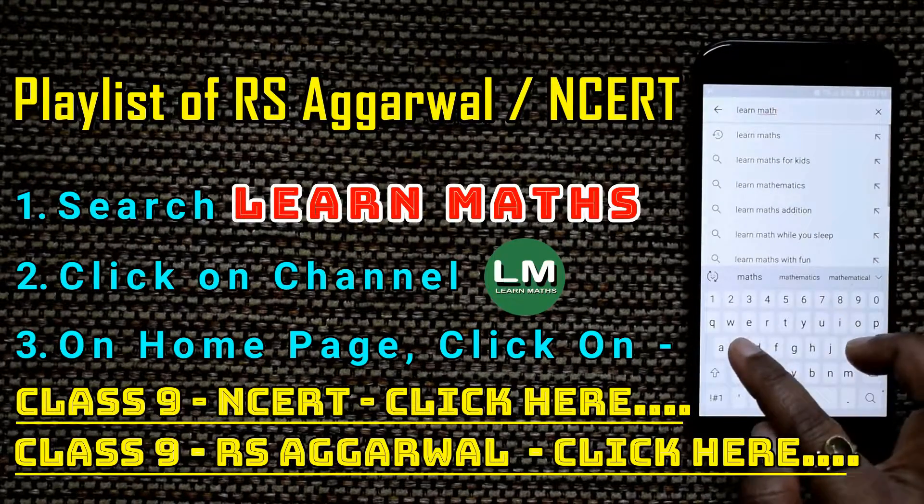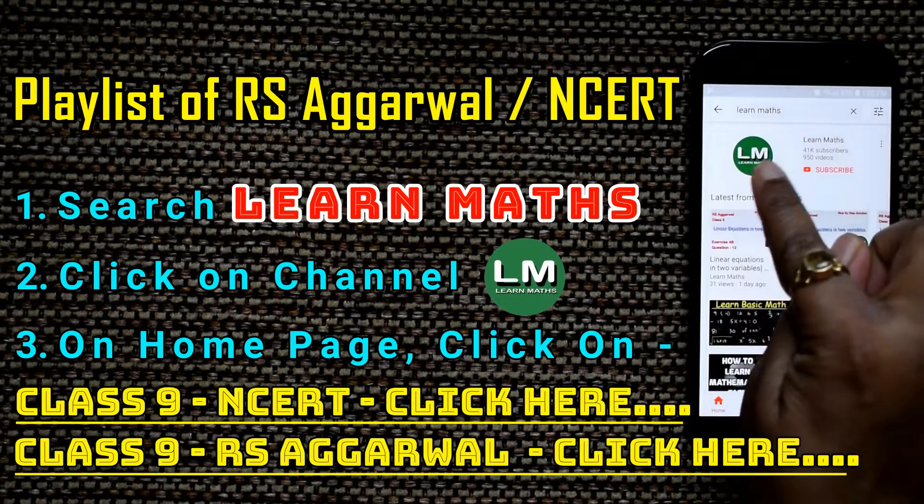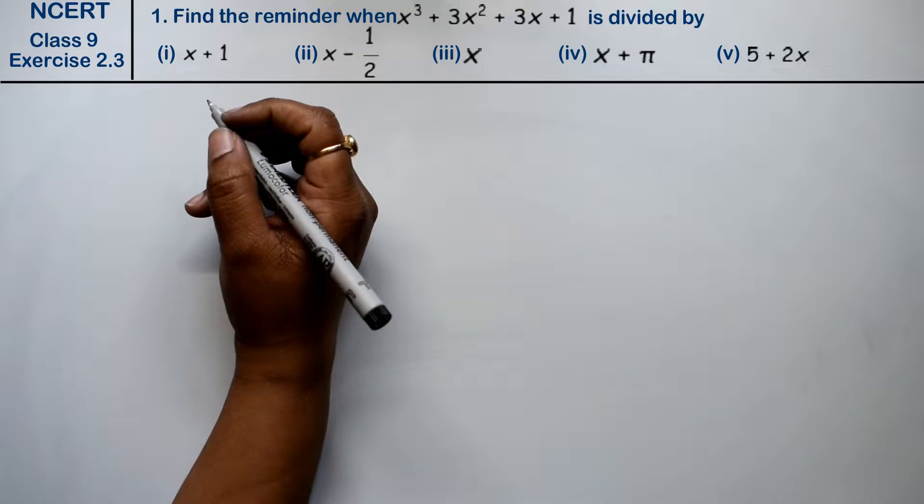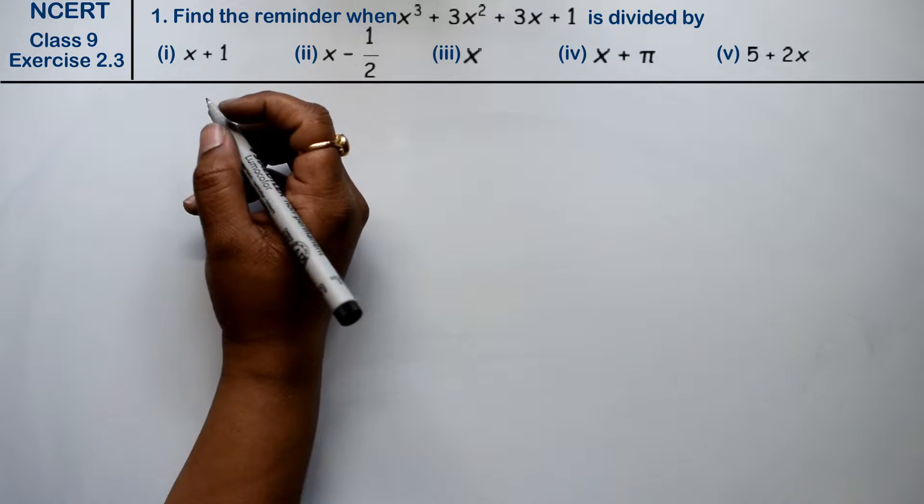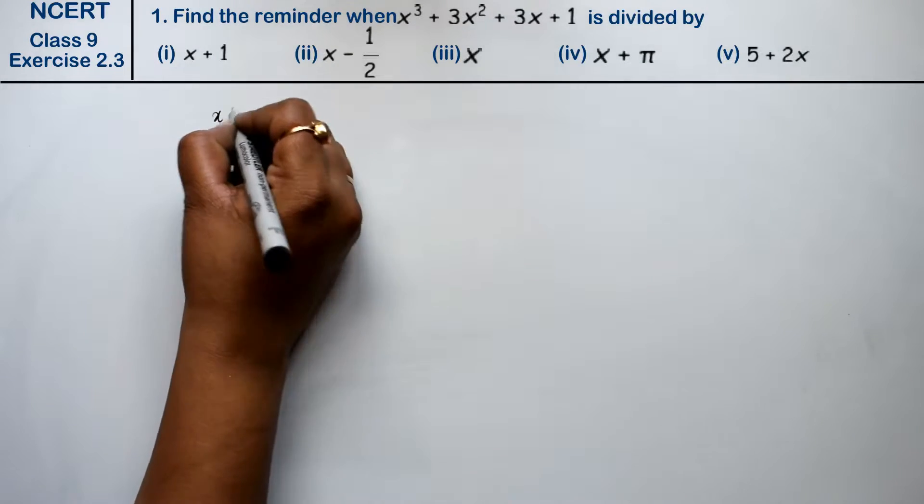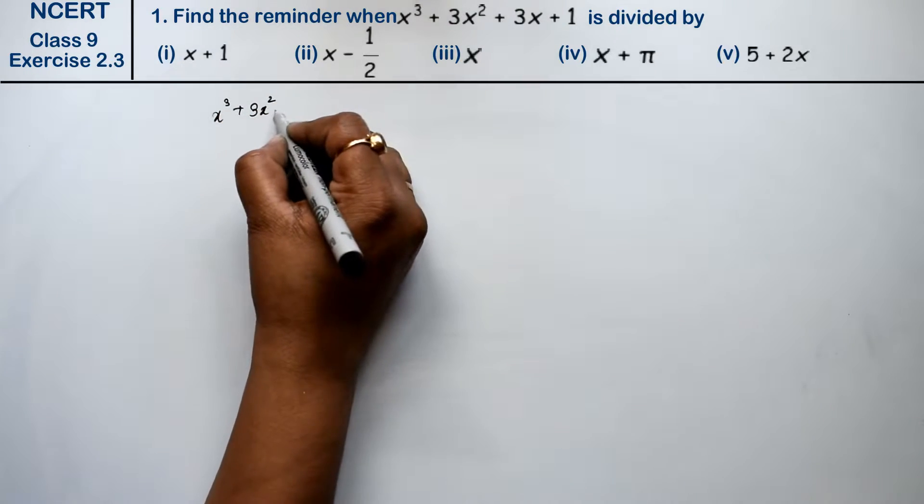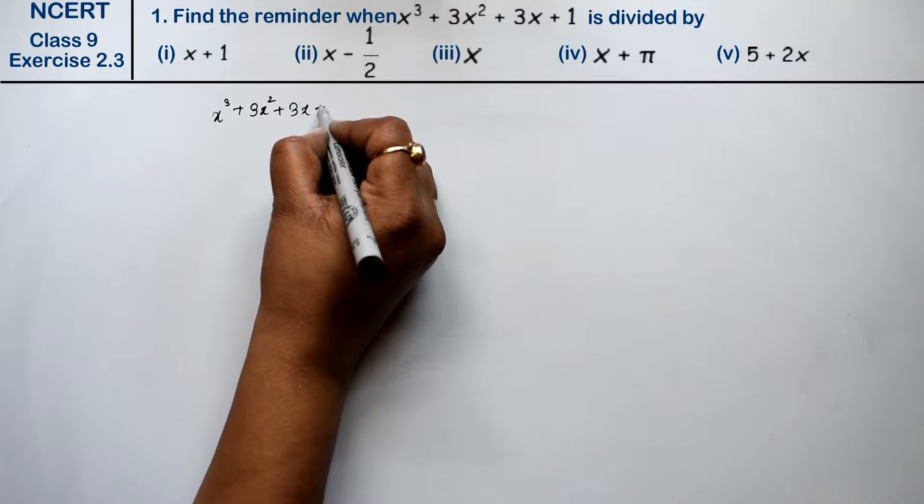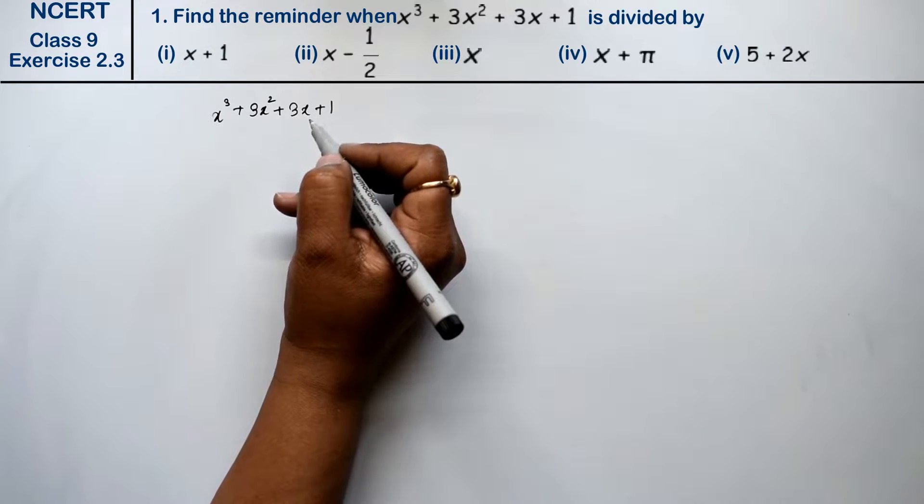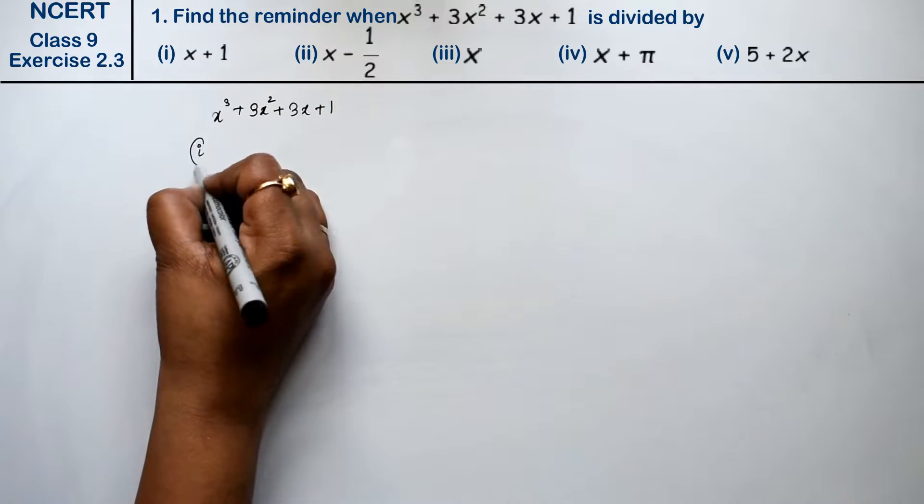Let's do question number first of exercise 2.3, that is polynomial. Question number first is find the remainder when x cube plus 3x square plus 3x plus 1 is divided by first part x plus 1.